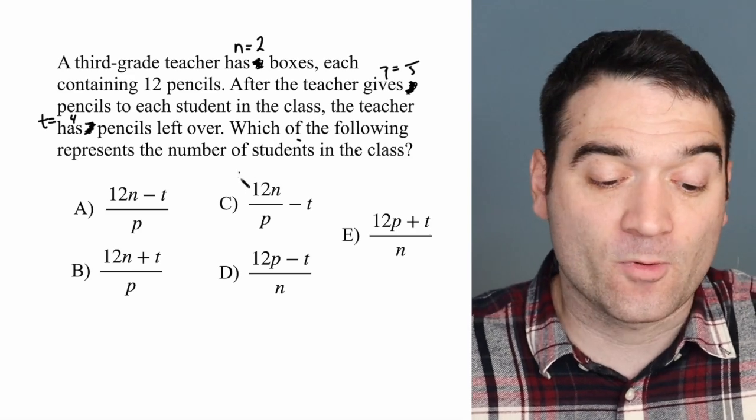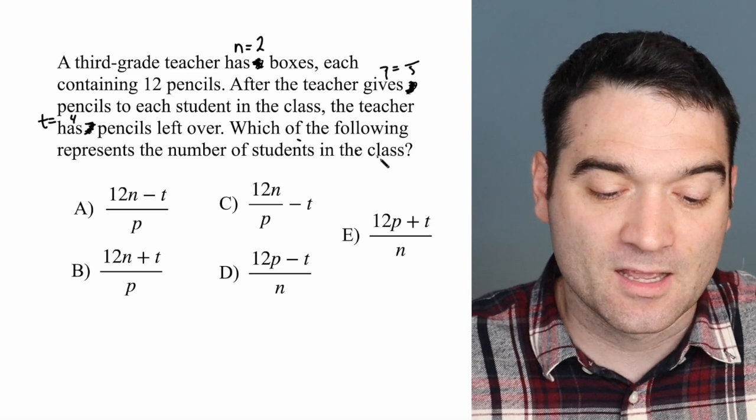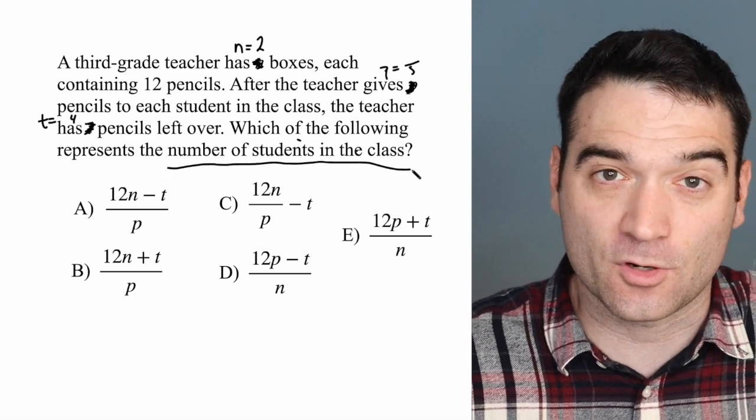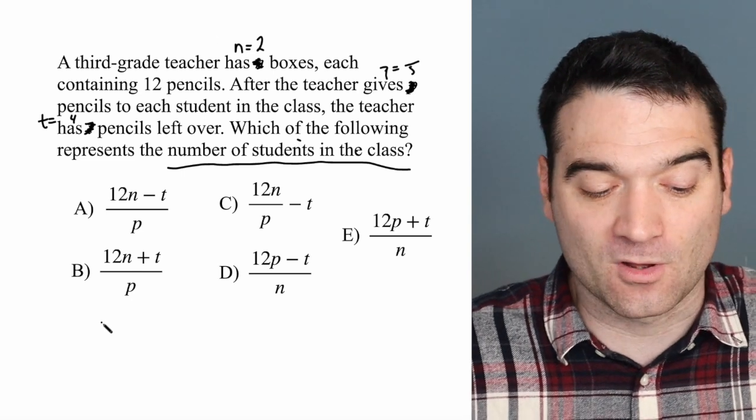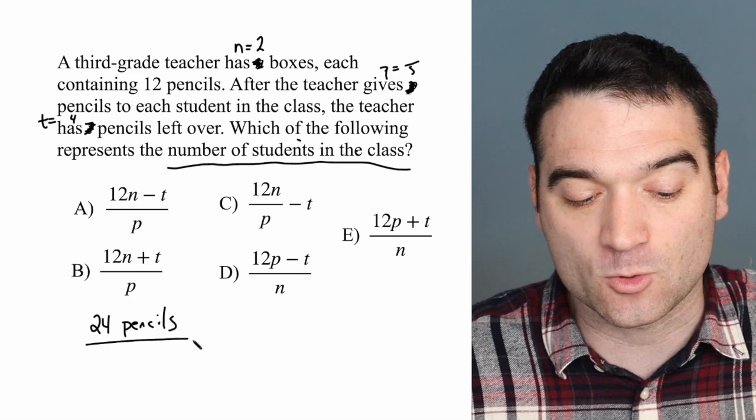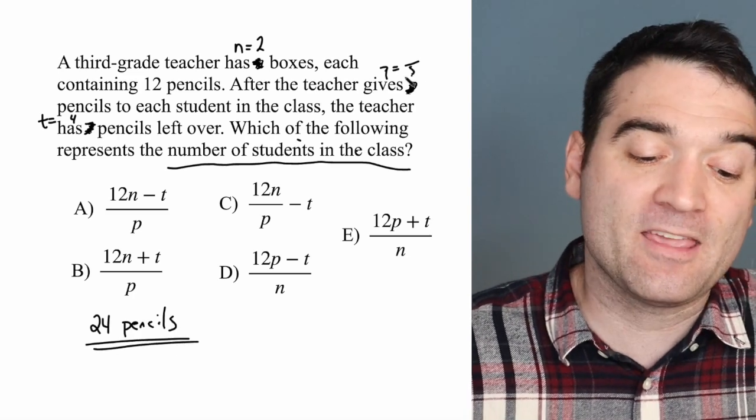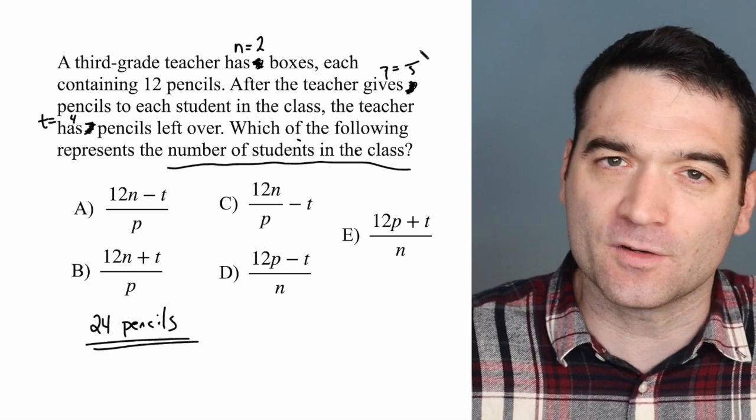Which of the following represents the number of students in the class? Well, we can answer this question for ourselves, given the numbers that we chose. If I have 24 pencils overall, so I'll write it down here. I have 24 pencils, two boxes, each containing 12 pencils. I'm going to give five pencils to each student, and after I do that, I have four left over.